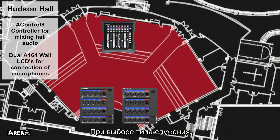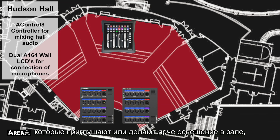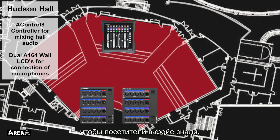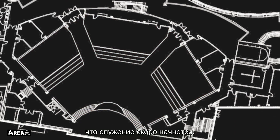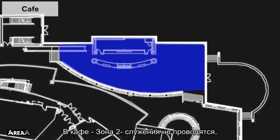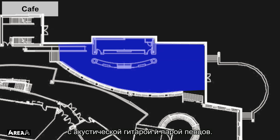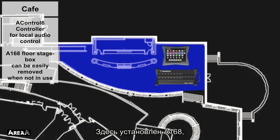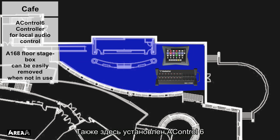When selecting a service type, the Fourier 4 can also fire GPO signals to dim or brighten the lights. Furthermore, timed announcements can be triggered from the controller to inform the audience in the lobby that the service is about to begin. The Connection Cafe, Area 2, doesn't hold services but occasionally has small musical worship acts — an acoustic guitar and a couple of singers. In here is an A-Control 8, which can be packed away out of sight when no musicians are set to perform.